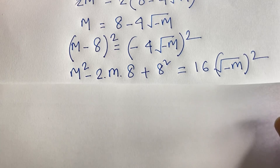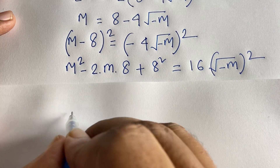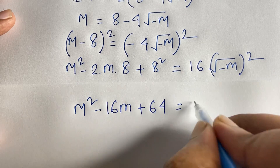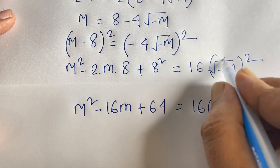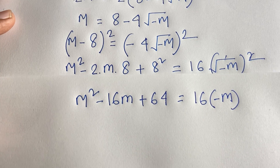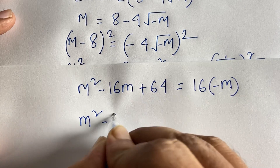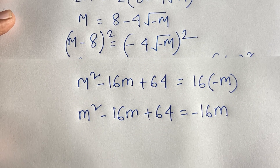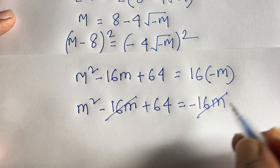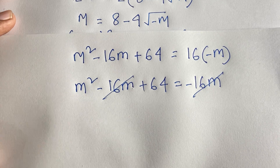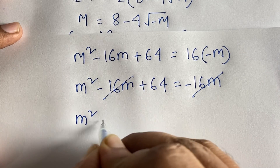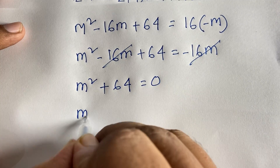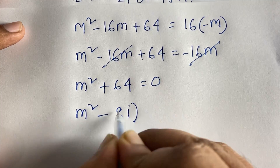So we get m² minus 16m + 64 = -16m. The -16m cancels on both sides, leaving m² + 64 = 0. This can be written as m² minus (8i)² = 0, because (8i)² = 64×(-1) = -64, and minus (-64) gives +64.